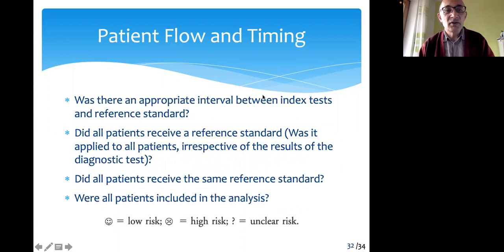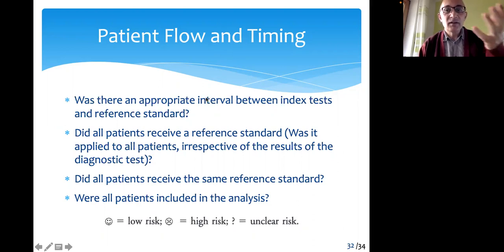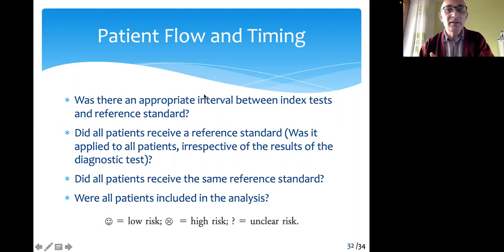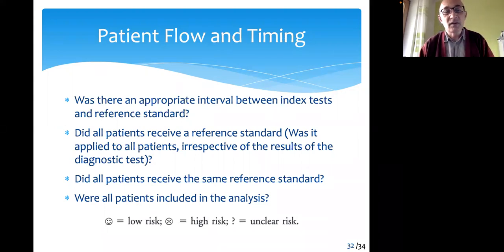The fourth dimension is patient flow and timing. In this category, we consider different aspects: how patients were included in the study, whether all those who were included were also included in the analysis, or whether there were too many dropouts. Did all patients receive the same index test and same reference standard? These kinds of questions help us judge the quality of the study from this aspect.